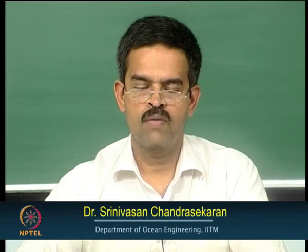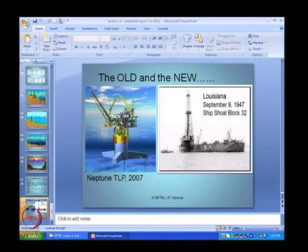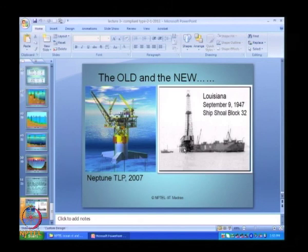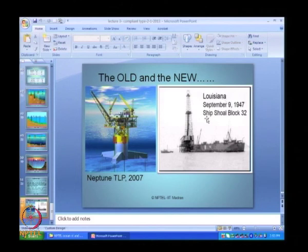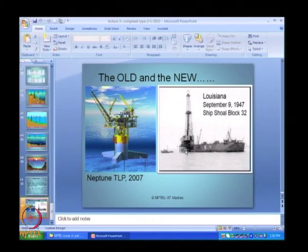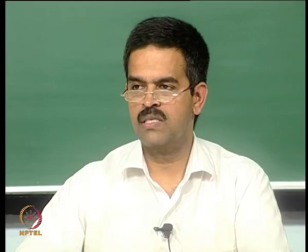Comparing old and new offshore platforms: Neptune TLP on the left was constructed in 2007 as a tension leg platform, whereas a platform constructed on September 9, 1947 in Louisiana at Ship Shoal Block 2 shows a contradictory difference in platform type, geometric configuration, structural design, area, and depth of operation. This demonstrates that the offshore industry has grown tremendously over the past 100 years.